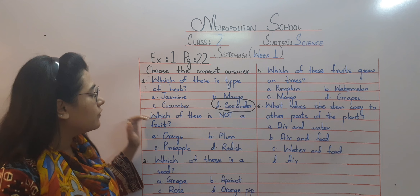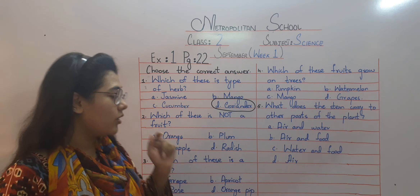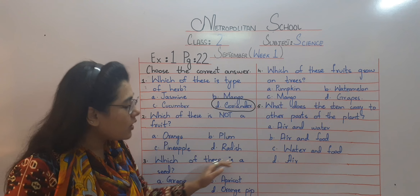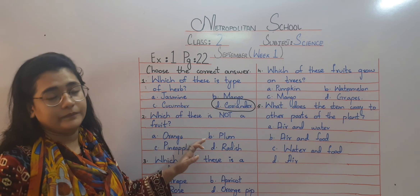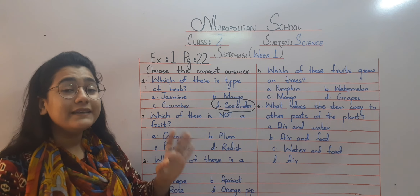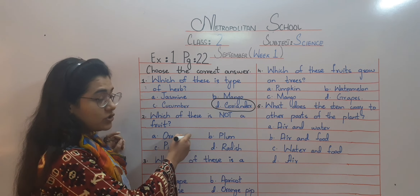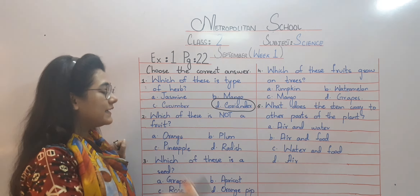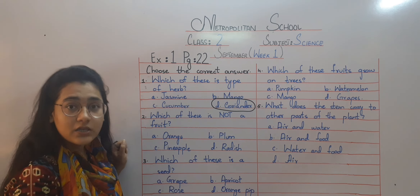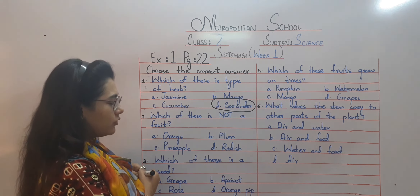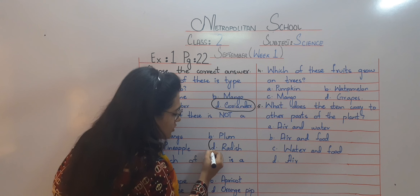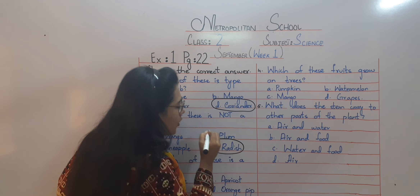Number two: which of these is not a fruit? The options are orange, plum, pineapple, or radish. Orange is a fruit, plum is also a fruit, pineapple is also a fruit — so the leftover one is radish. And radish is not a fruit, it's a vegetable.